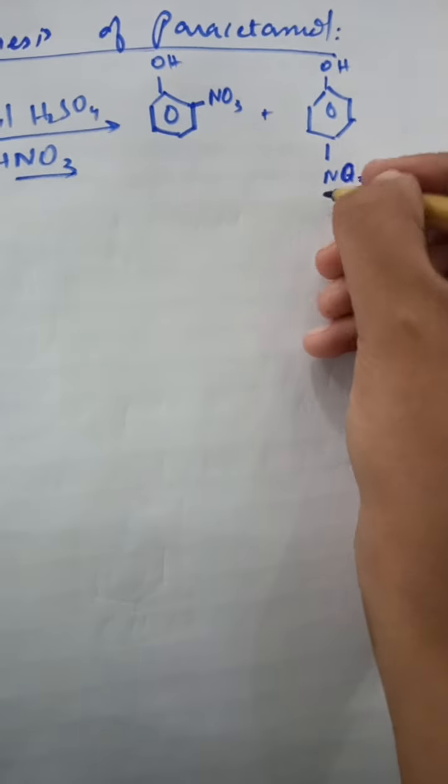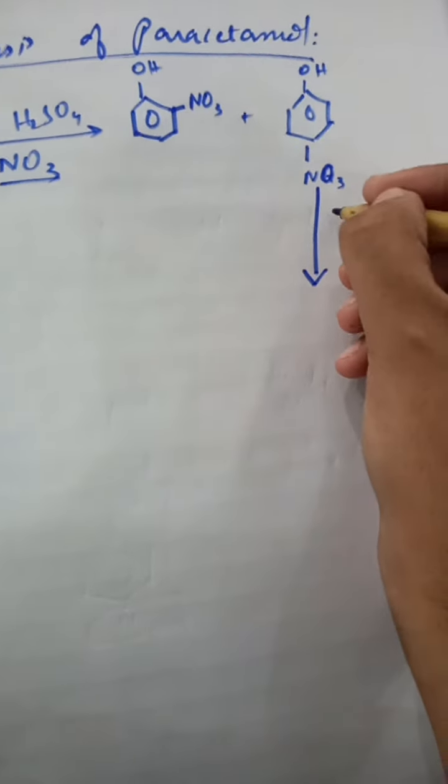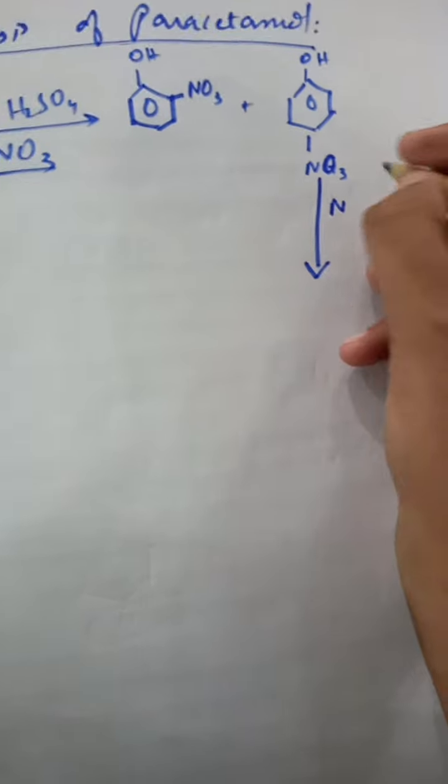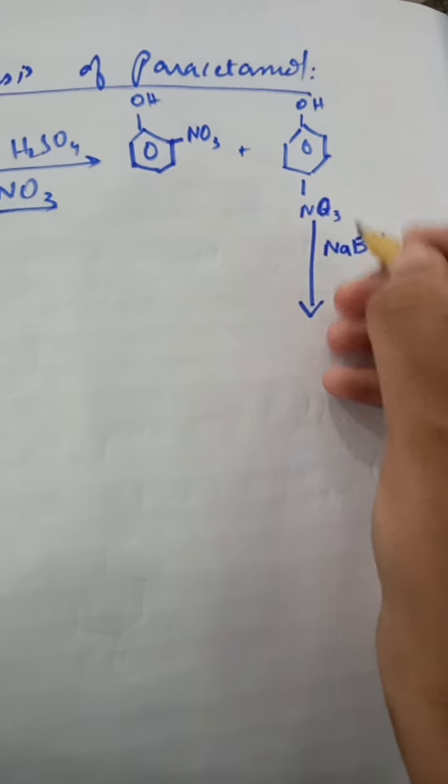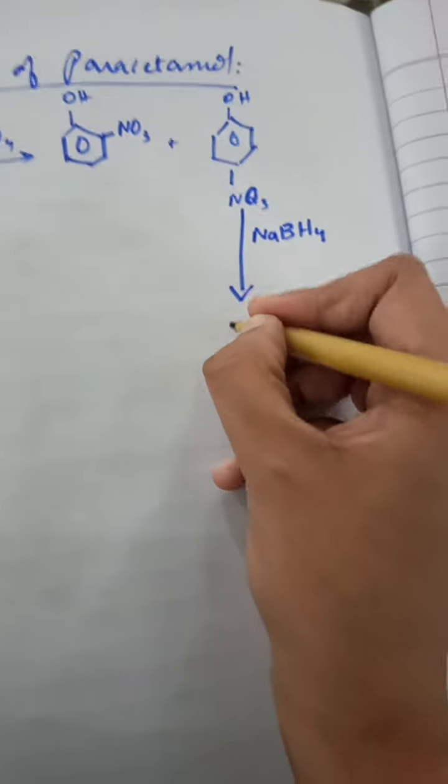What happens is this 4-nitrophenol becomes reduced with the sodium borohydride NaBH4. When sodium borohydride reduces it, reduction means the loss of oxygen and addition of hydrogen.